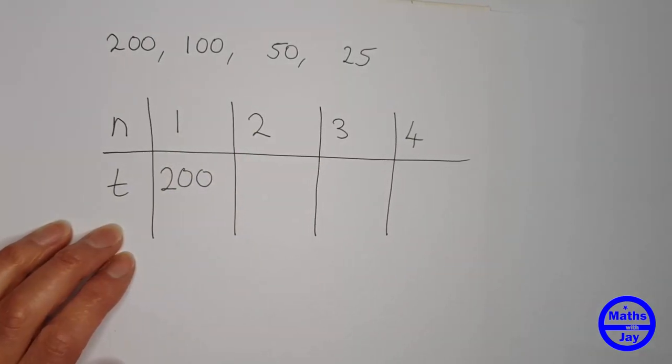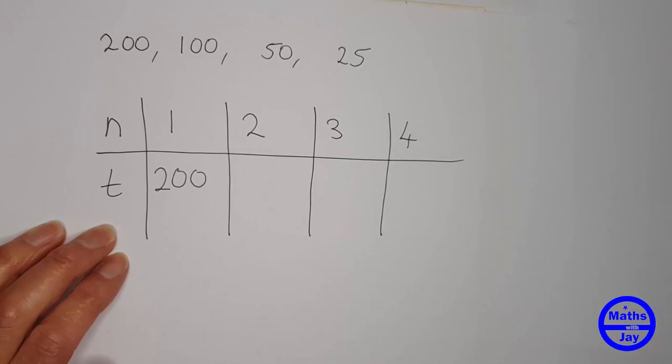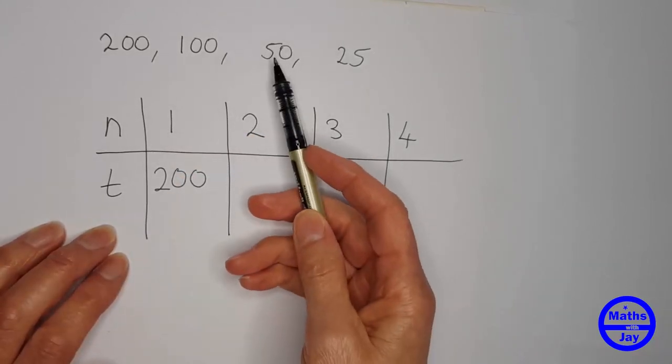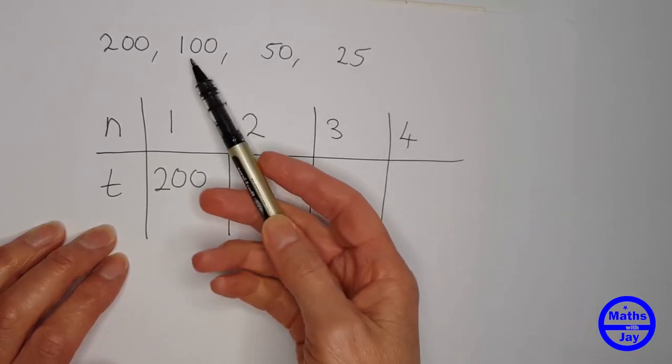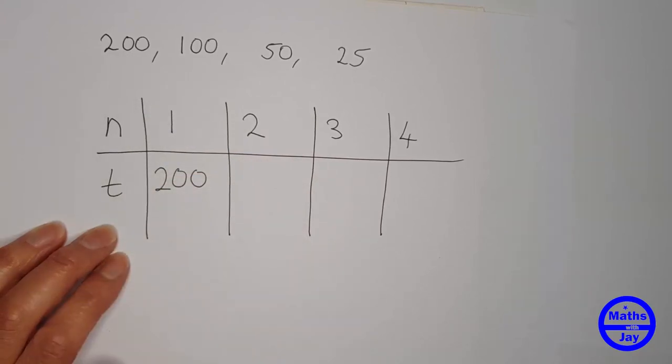So for example we could say that 100 is 200 minus 100 but then 50 wouldn't be the same sort of thing would it? We're trying to find a pattern that holds for all of these numbers in relation to the first one.